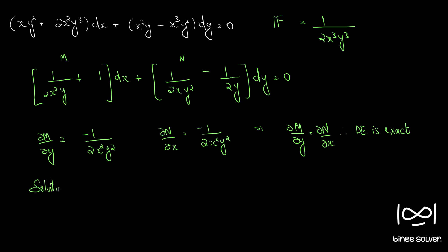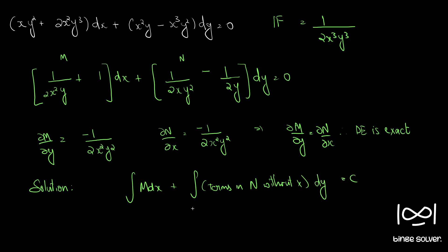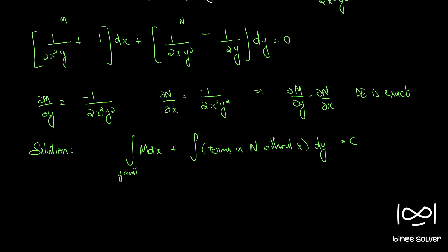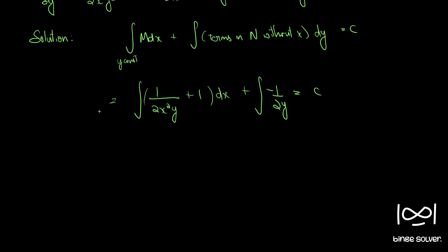The solution can be found using the formula: ∫M dx + ∫(terms in N without x) dy = c. Integrating M dx gives −1/(2y) · (x⁻¹/1) + x, and the only term in N without x is −1/(2y), giving −1/(2y)·(−1/x) + x − (1/2)log y = c.